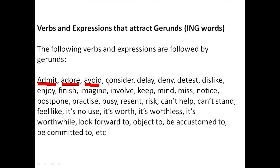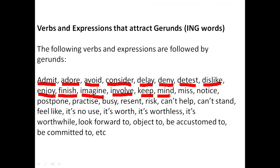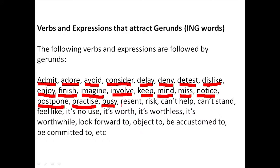Words like avoid, consider, delay, deny, detest — meaning hate — dislike, enjoy. For example: 'I enjoyed doing it.' After enjoy, you have an ING element. 'She admitted stealing the fish.' After admitted, you see ING. Words like finish, imagine, involve, keep, mind, miss, notice, postpone — the T is silent, so it's 'postpone' — practice, and busy. 'I'm busy doing it.' After busy or practice, the word coming requires an ING. We also have resent, risk, and can't help. 'I can't help laughing.' When you use can't help, you require an ING.